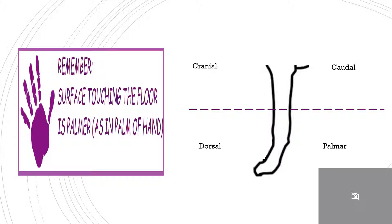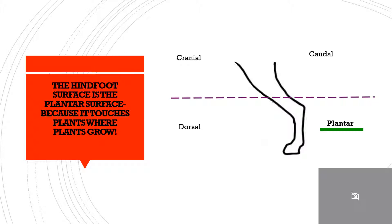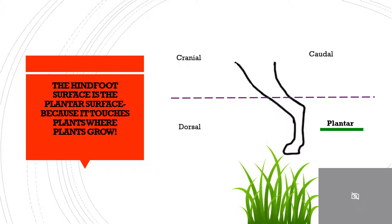The following image shows the cranial, caudal, dorsal, and palmar aspects, which covers the forelimb. For the hindlimb, we have our cranial, caudal, and dorsal aspects. However, we term the hindfoot surface as being the plantar surface, not the palmar — and that is because it touches where plants may grow.